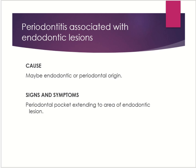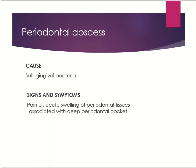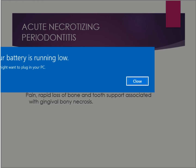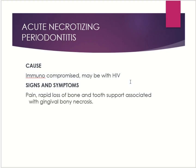Periodontal abscesses are swellings associated with a periodontal pocket and they form above the attached gingiva. Then we have acute necrotizing periodontitis, in which the patient is immunocompromised and most probably has HIV. There is severe bone loss, and it can lead to Noma if the patient is also malnourished, which usually happens in African patients. That covers this chapter.